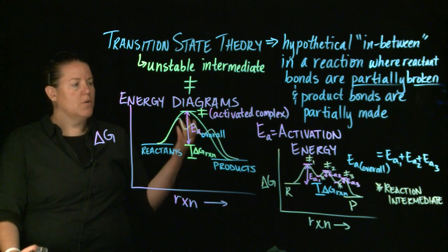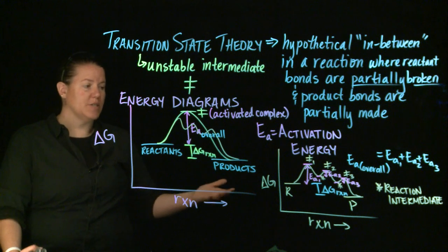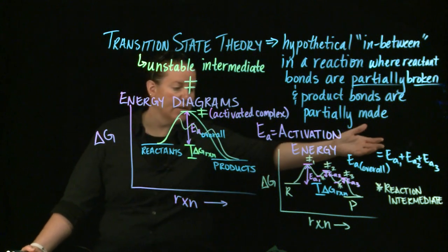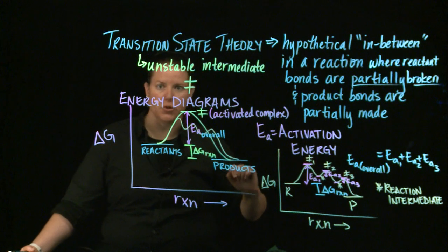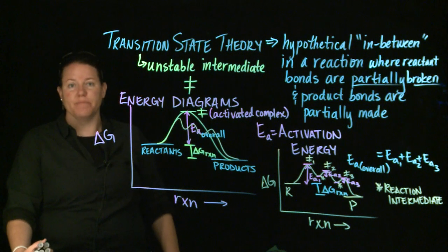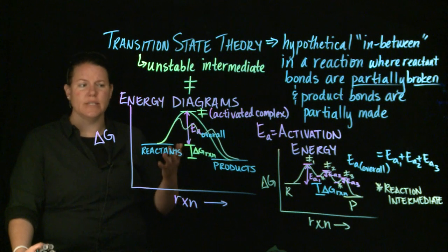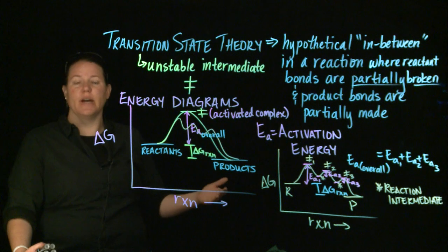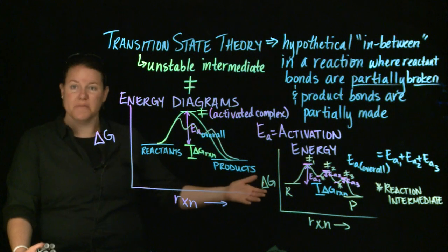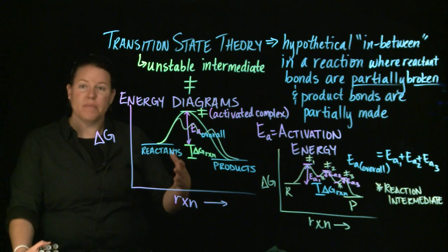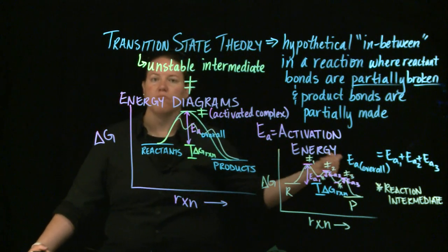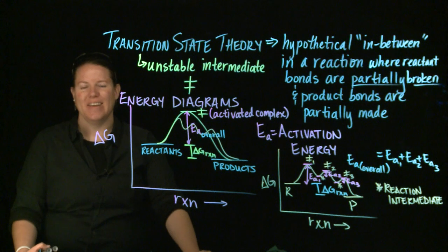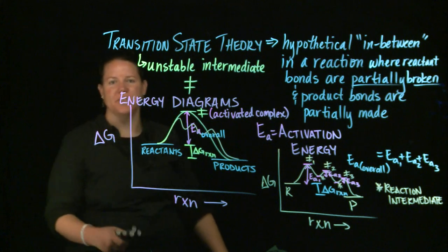In this three-step diagram, we have three transition states, three activation energies. The slowest step is the first step because it has the largest activation energy compared to the other two, and we have reaction intermediates as well. Multi-step reactions have lots of different transition states, and I can tell this is a three-step reaction because it has three hills. Until I see you next time, I bid you adieu.